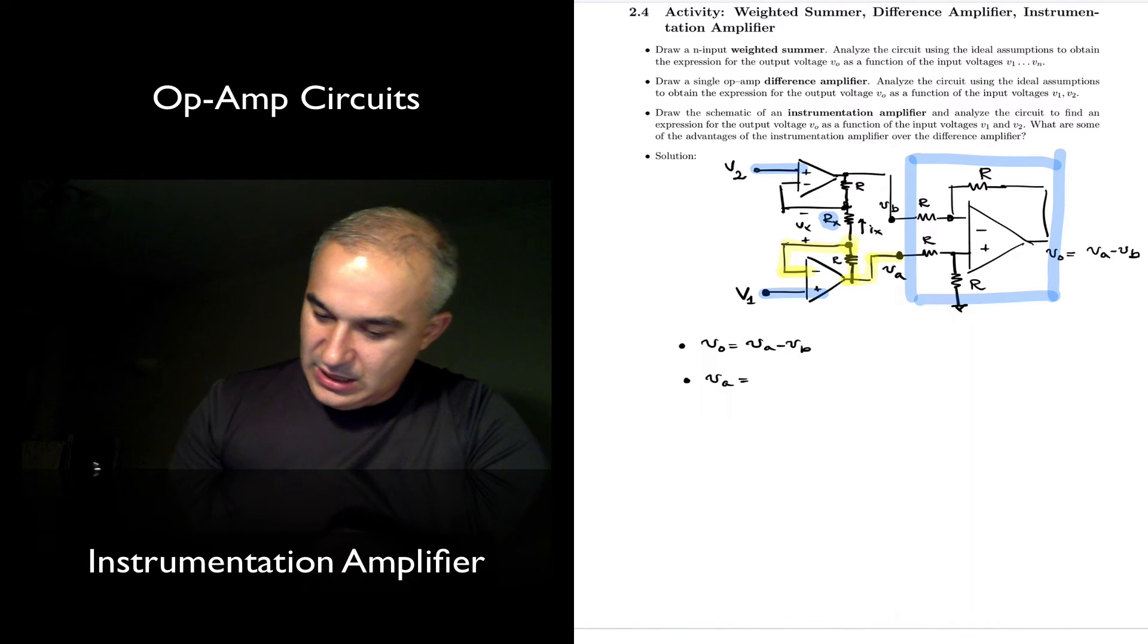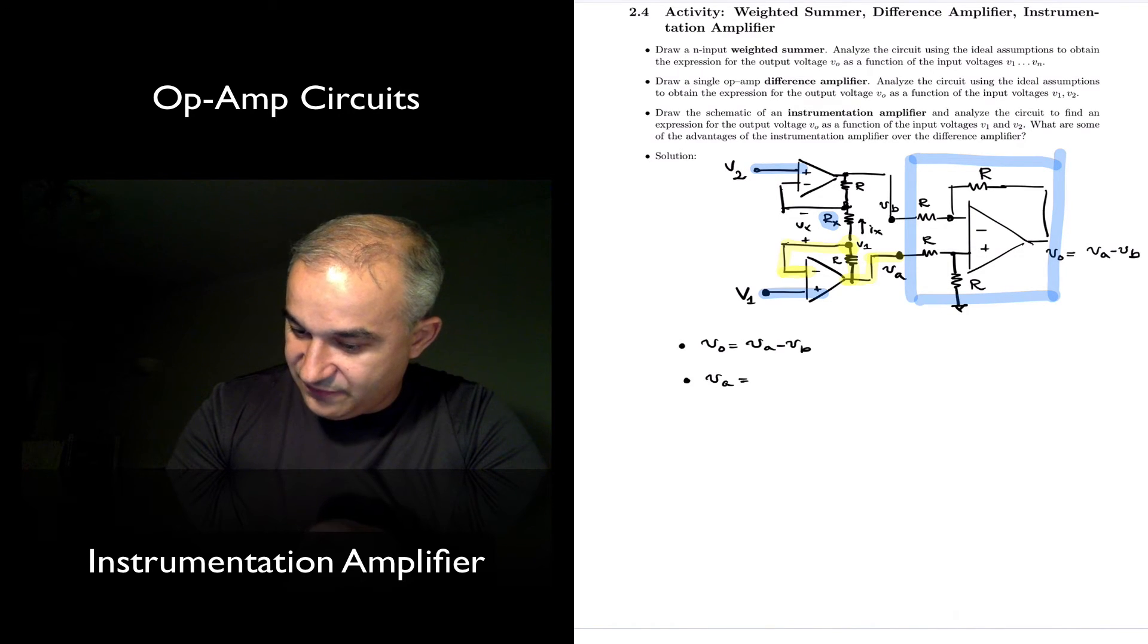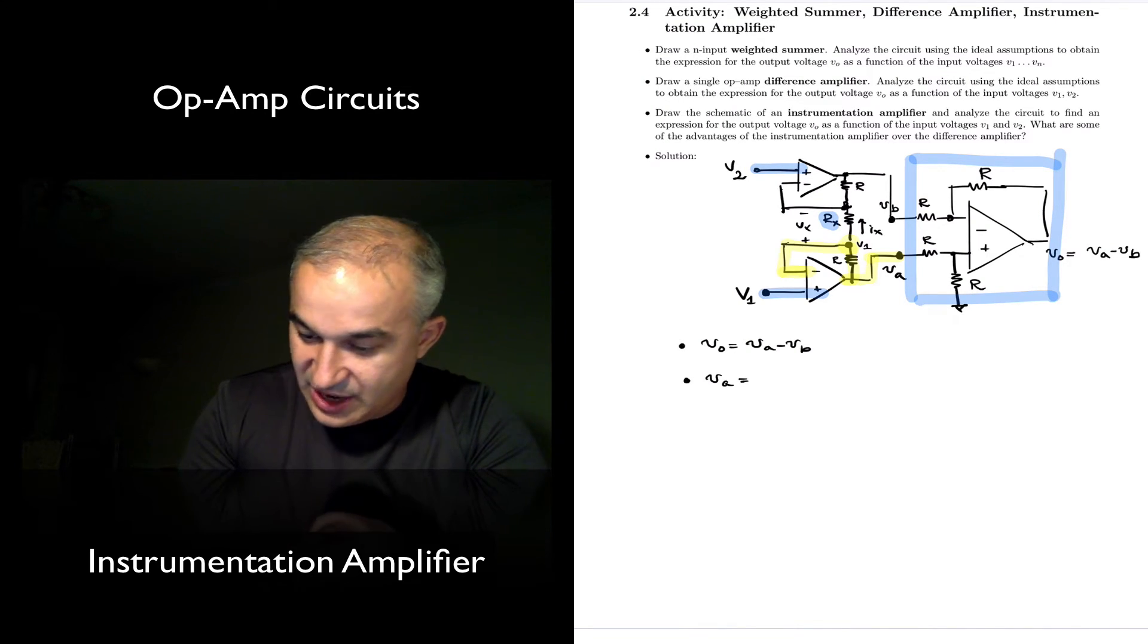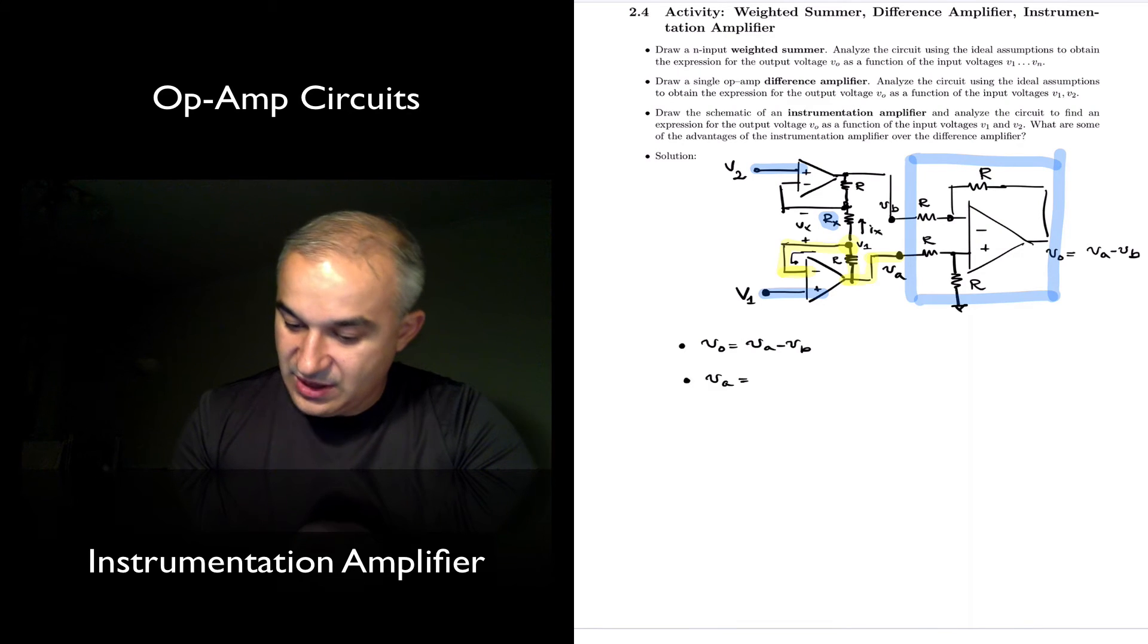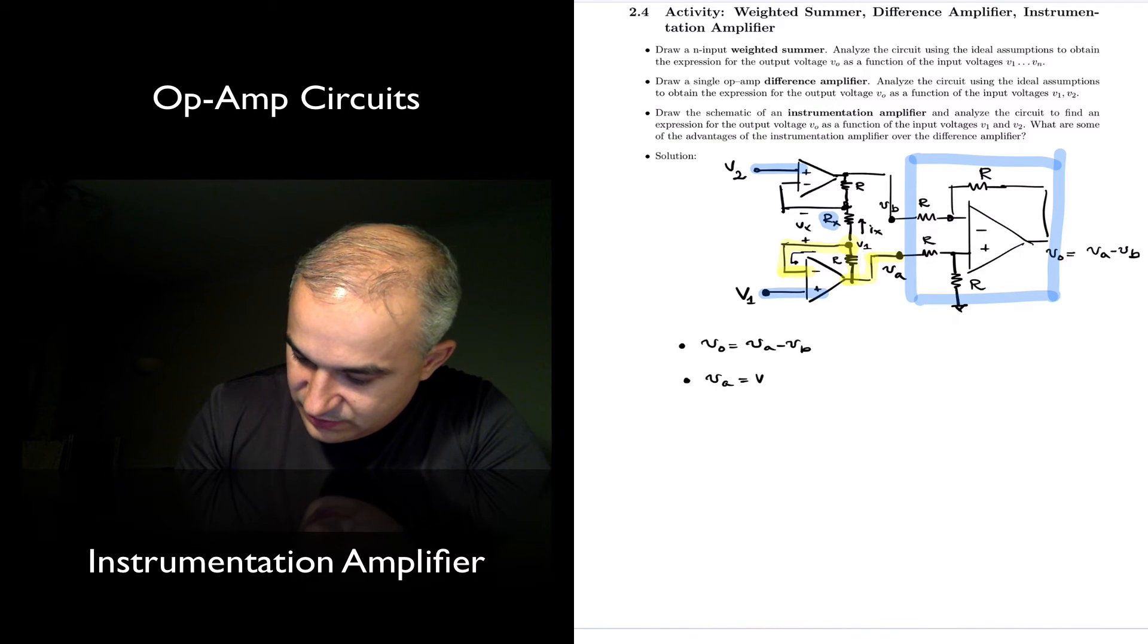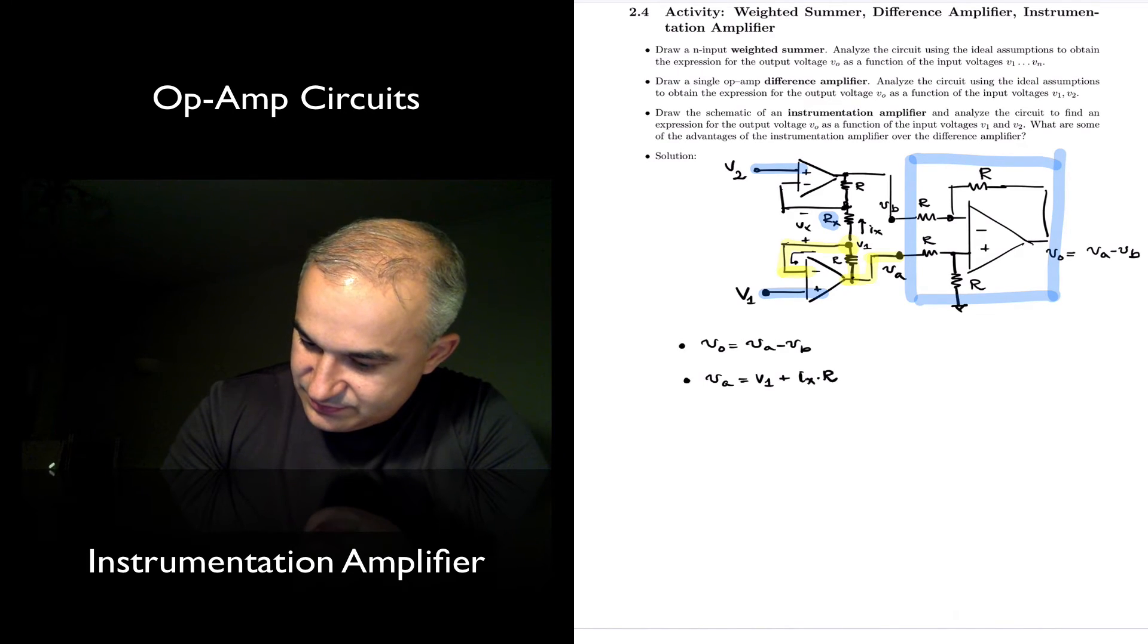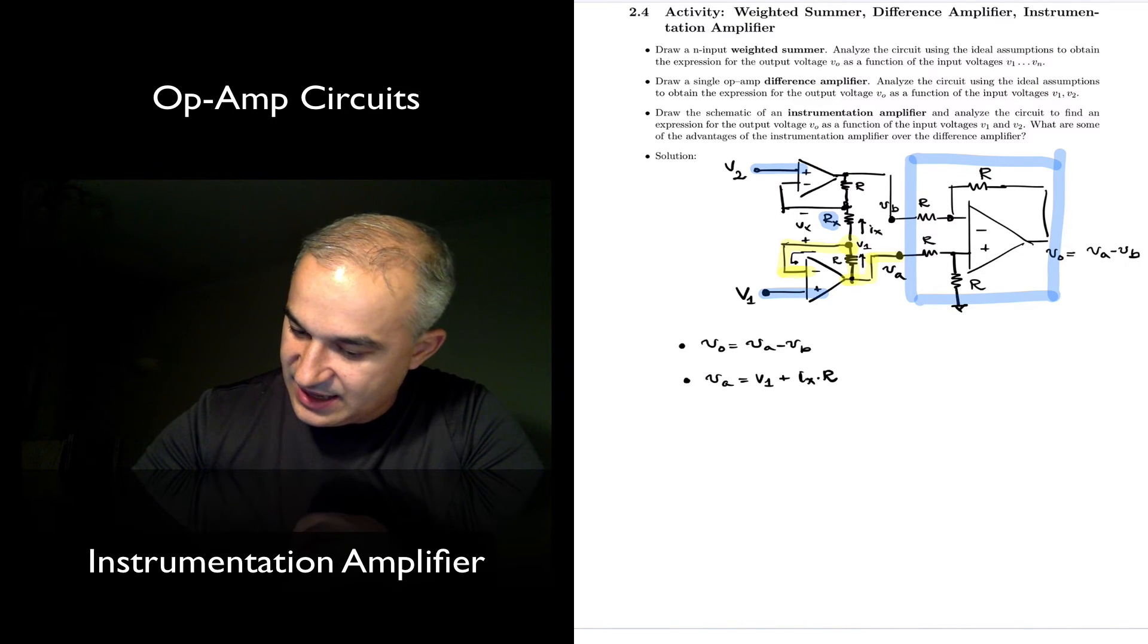So we know what the voltage is here - this is V1 right there. And so we are going to have, and we know this current Ix is going through this network because the current entering, the bias current, is 0. Therefore, what do we have here? V output Va will be V1 plus Ix times R, plus this Ix times R.